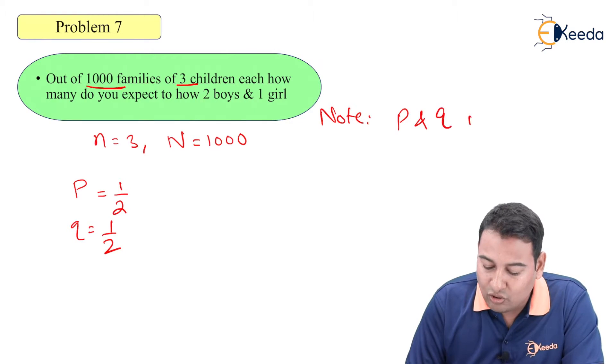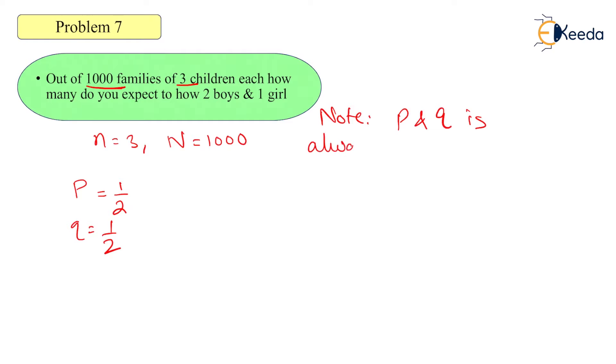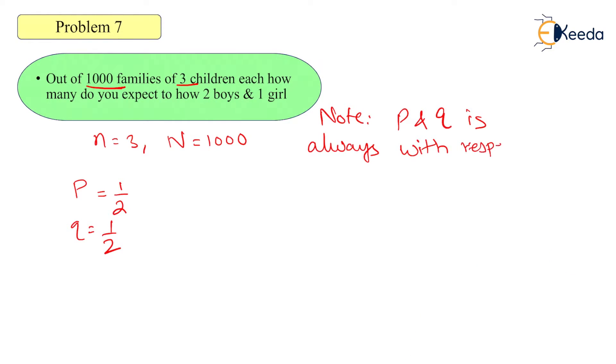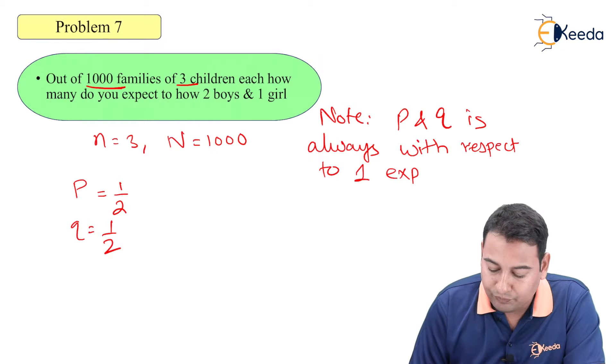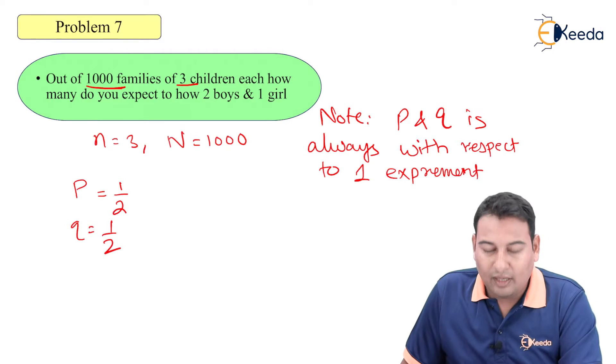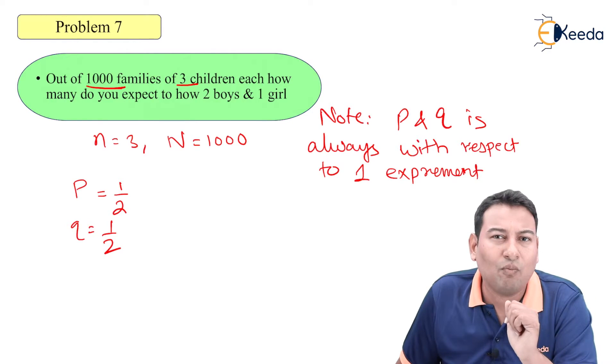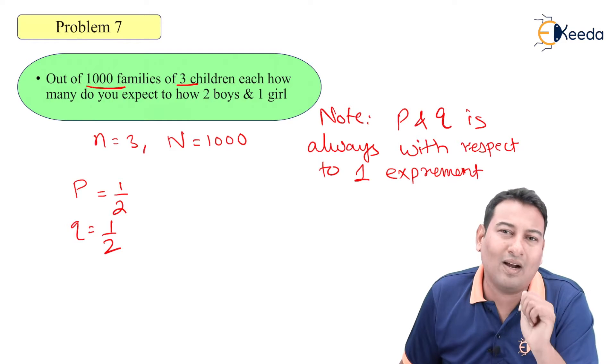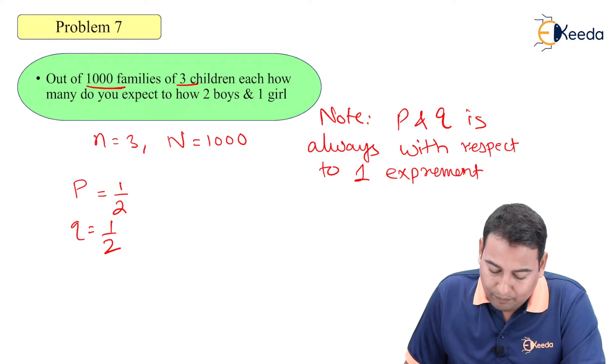P and Q is always with respect to one experiment, with respect to one experiment or you can say with respect to one trial. If there is one boy, what is the chance of boy? 1 by 2. It is always with respect to one trial. Probability of boy is half and girl is half.